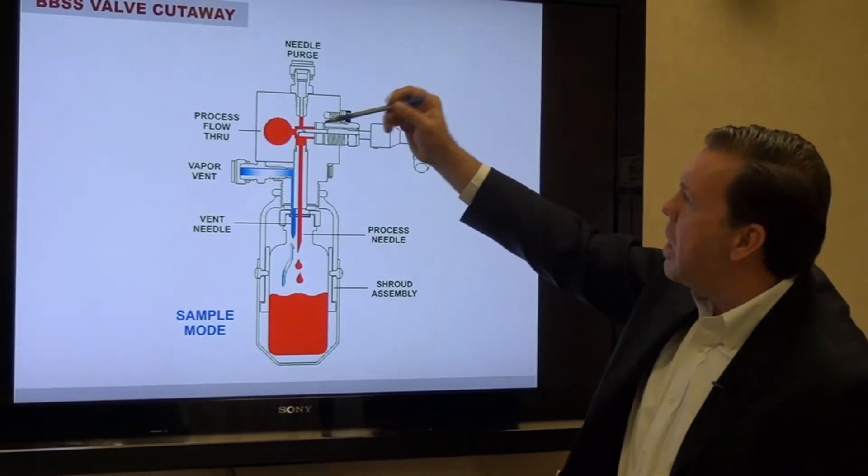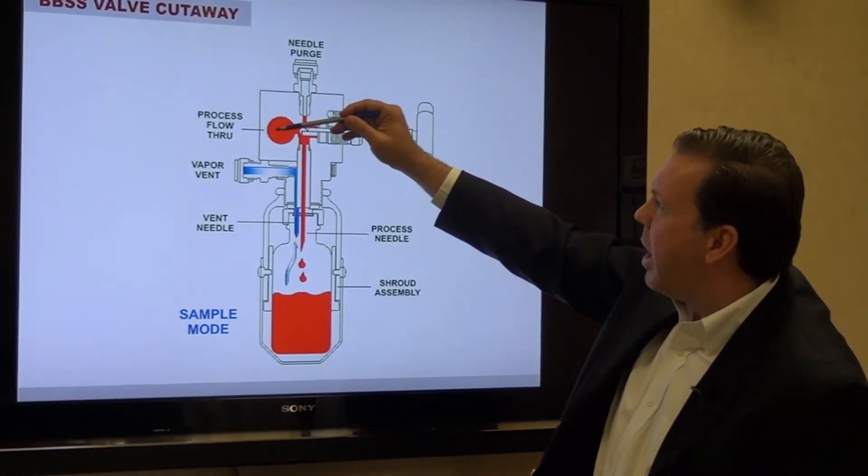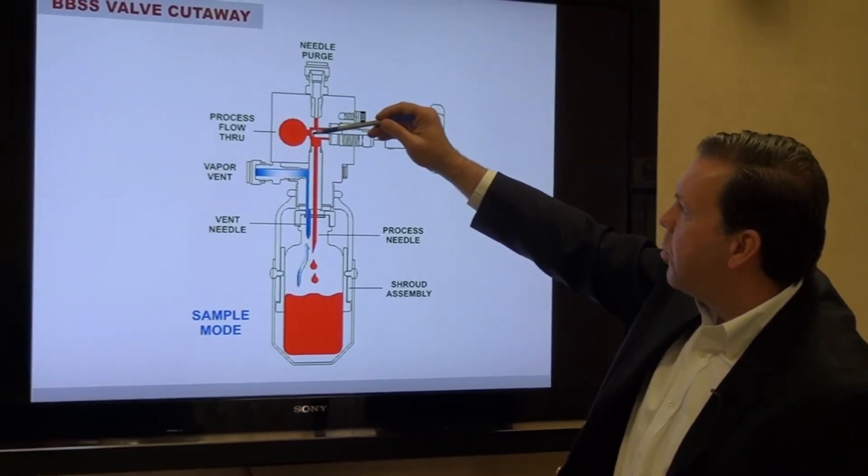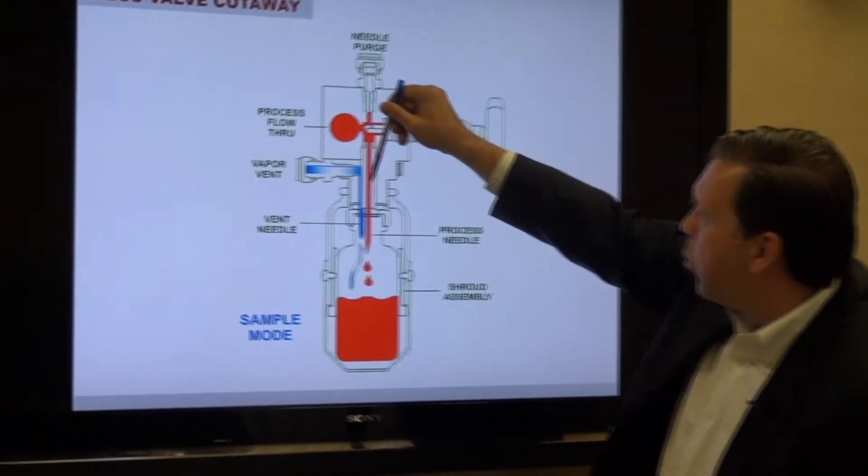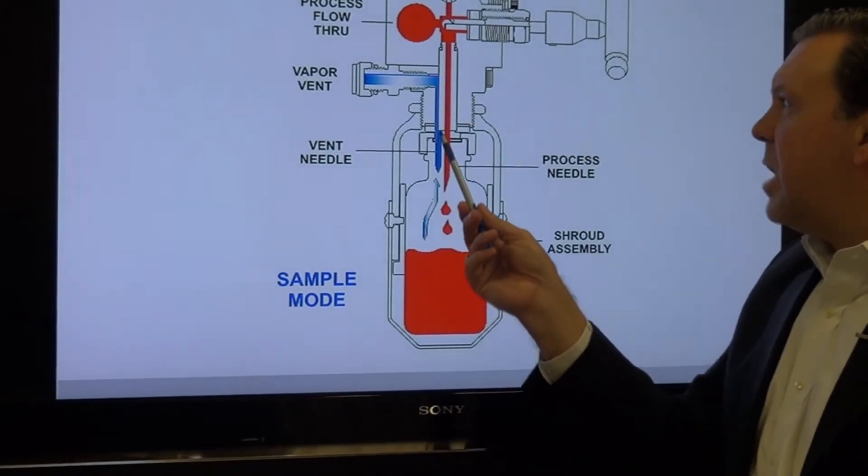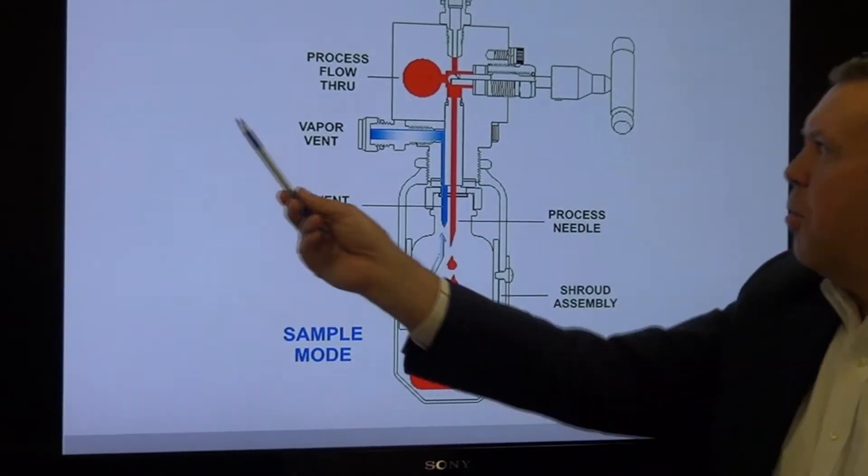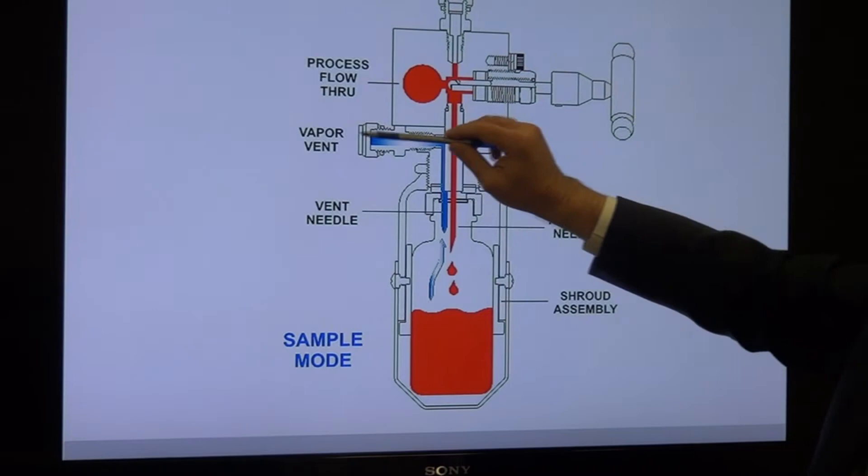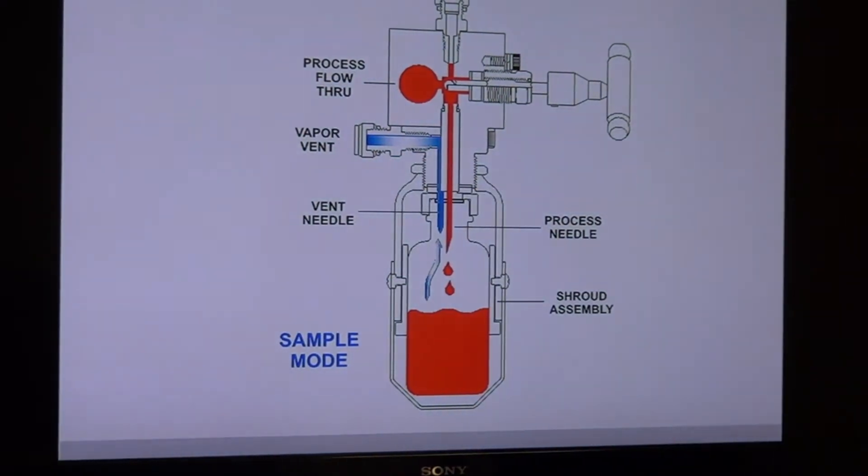But when that valve is open, now we open that side port and process can flow through the side port down through the process needle into the bottle. Remember we said the vapor inside the bottle is now going to escape through the vent needle, and that vapor vent is typically going to be tied to the flare header system.